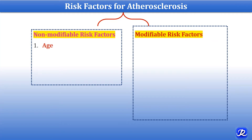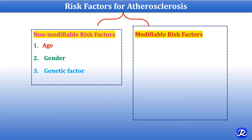The non-modifiable risk factors are: first, age — as age advances, the elasticity of the vessel wall decreases and plaque formation progresses. Second, gender — males are affected more than females, possibly due to the protective effect of estrogen in females. Third, genetic factors — family history is the most important independent risk factor, and certain disorders like familial hypercholesterolemia are strongly associated with atherosclerosis.